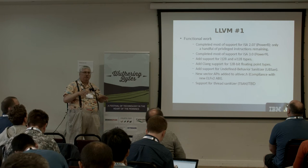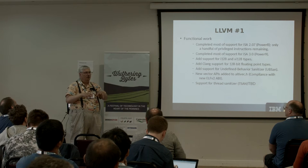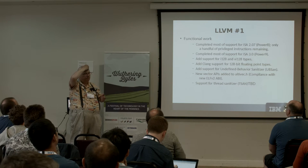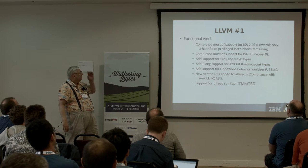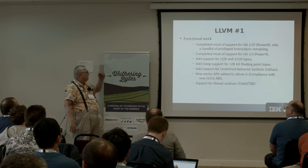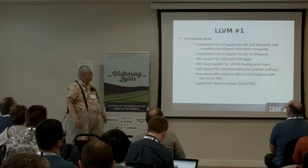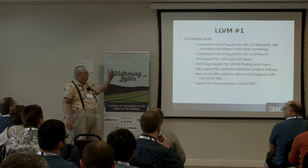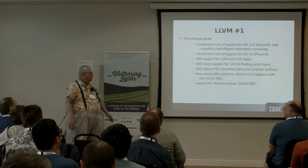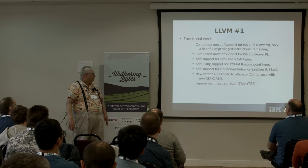A couple of years ago we were mostly supporting just the XL compiler and GCC sort of as an afterthought. Now we have four compilers we're supporting because Go is sort of its own little universe: LLVM, GCC, and the traditional XL compiler. They did a lot of work supporting ISA 2.07 — that's Power8 — except for a handful of privileged instructions remaining. They added int128, vector int128 types, and clang support for the IEEE 128 floating point type. And a sanitizer, new vector APIs to Altevec.h, and support for the thread sanitizer.